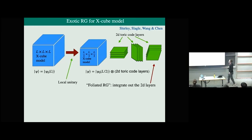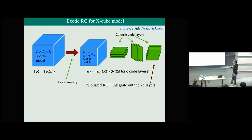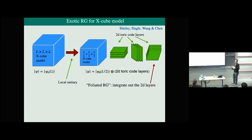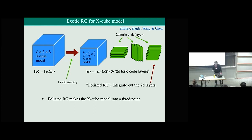What do I mean by exotic RG? Let's take the x-cube model. If we take an L×L×L cube of the x-cube model, we can apply a local unitary to make it into a cube of half the linear size, stacked with a bunch of 2D toric code layers in all three principal lattice directions. Normally in standard RG we'd say this is never going to be a fixed point. But in foliated RG, the idea is that we integrate out these 2D layers — treating them like trivial qubits and getting rid of them — and that makes the x-cube model into a fixed point.